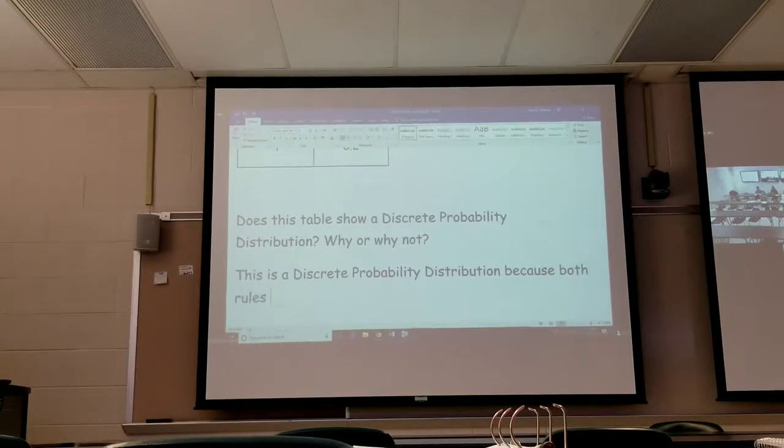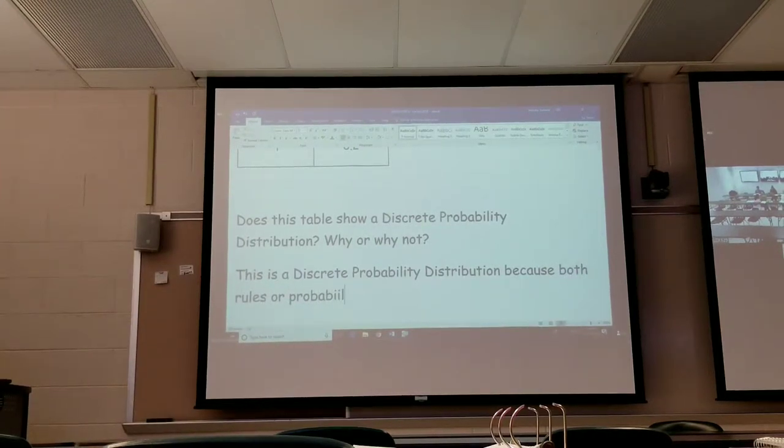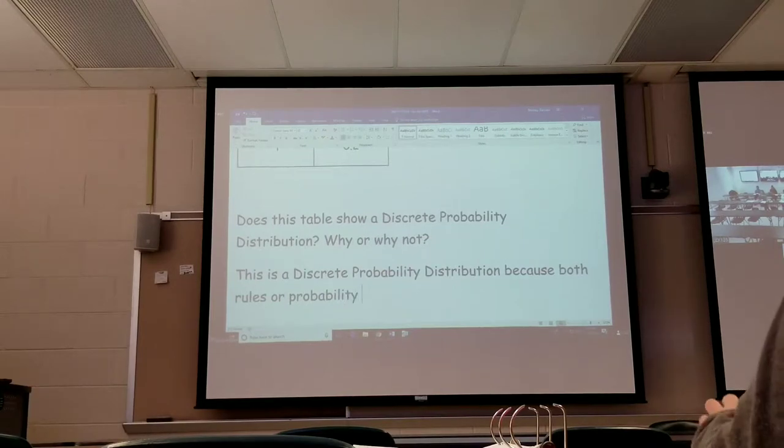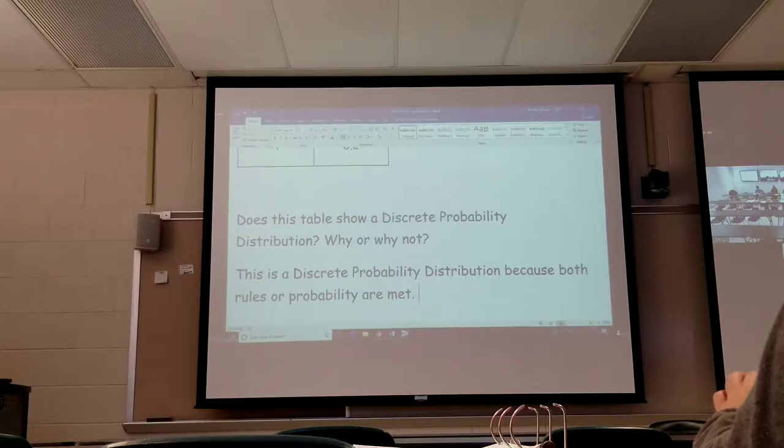Both rules of probability were met, and that's really all you have to say. If you follow up with a negative in that column, you can automatically say this is not a discrete probability distribution.